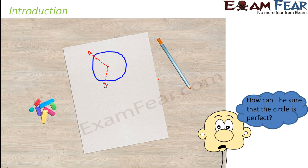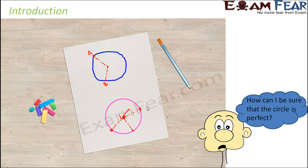So how do we ensure that we draw a circle such that each point on the circle is equidistant from the center? If you compare the blue circle with the pink circle, the pink one looks more accurate because each point is exactly at the same distance from the center as any other point. This is a perfect circle. In this lesson, we will learn how to draw geometrical shapes — circles, rectangles, triangles, angles, and line segments — very accurately.